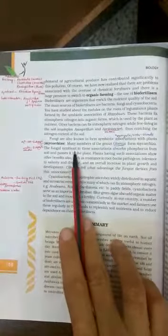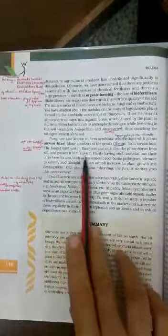The fungus symbiont in these associations absorbs phosphorus from the soil and passes it on to the plants. Plants get other benefits also.